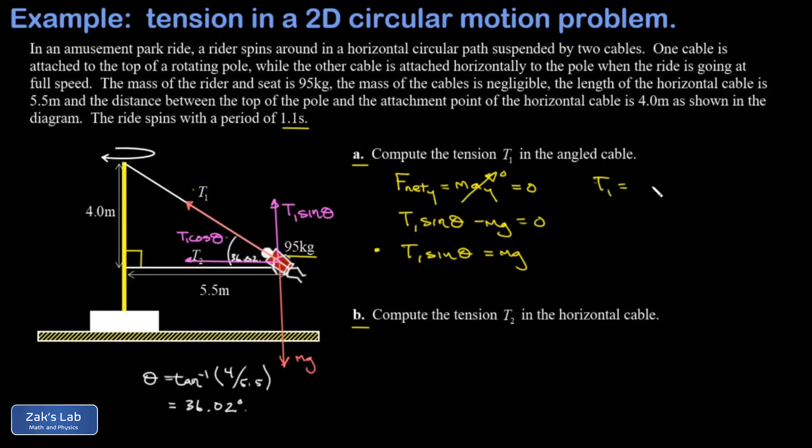I can solve symbolically for T1, which is mg over sine theta. Plugging in the numbers gives 1583.2 newtons. Rounding to three significant digits, I get 1580 newtons.